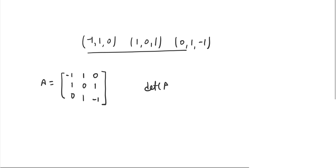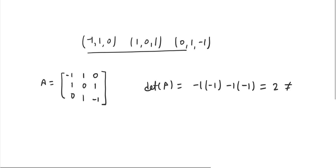The determinant of matrix A, if we expand along the first row, we get minus 1 and the result becomes minus 1, and for the second element minus 1, which gives a value of 2, which is not equal to 0. That means these vectors are linearly independent.